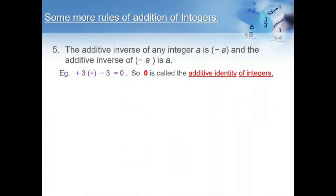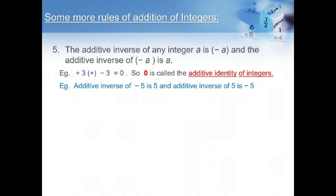When we add plus 3 with the additive inverse of itself, we get 0. Here, 0 is called the additive identity of integers. The second example: the additive inverse of minus 5 is 5, and the additive inverse of 5 is minus 5.